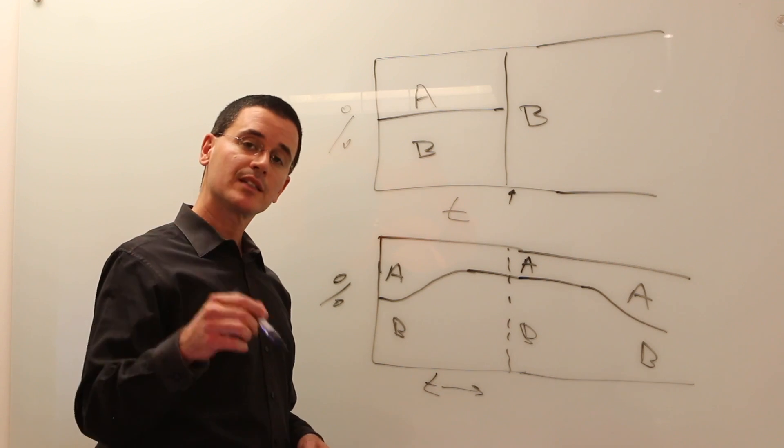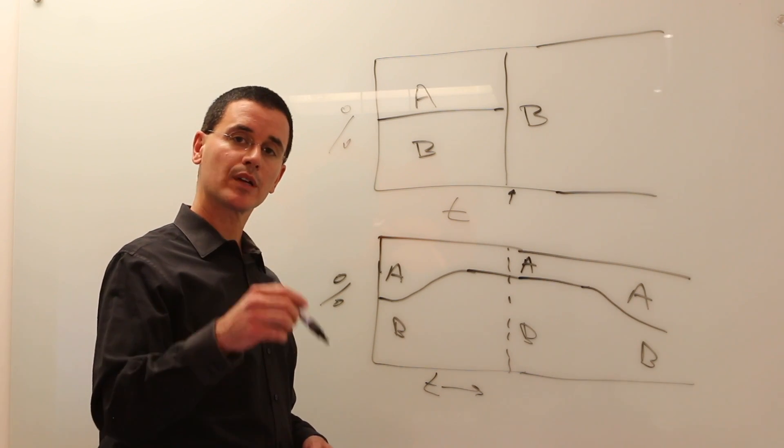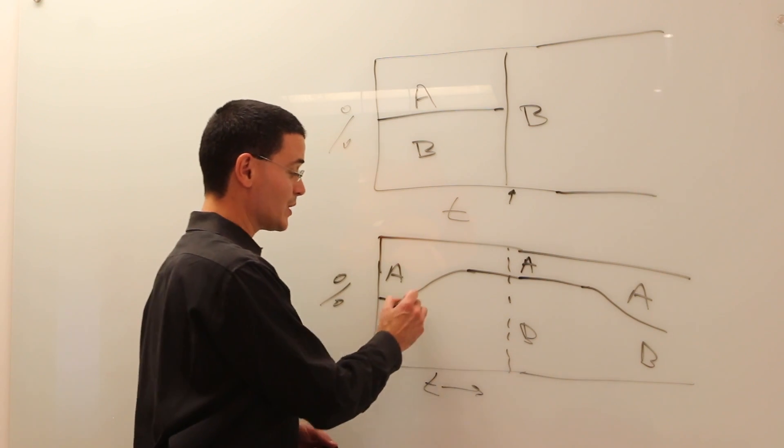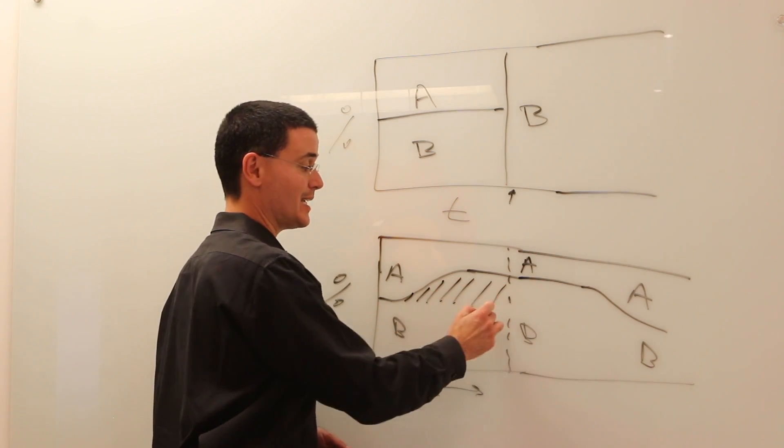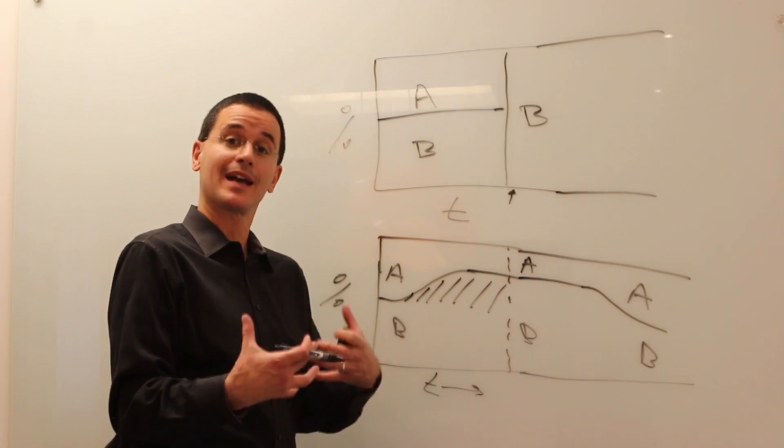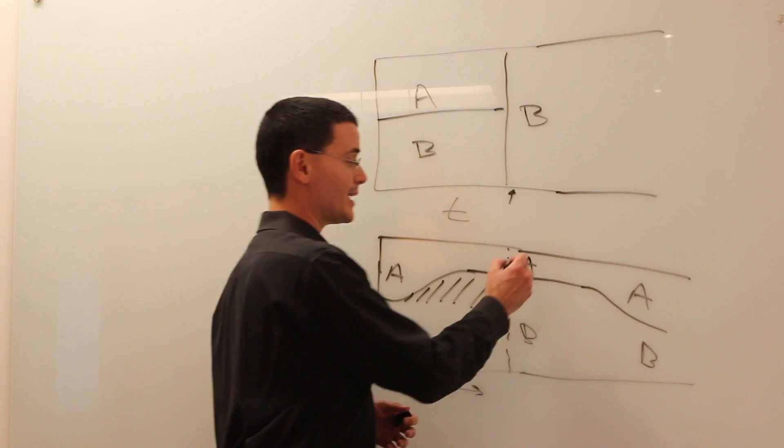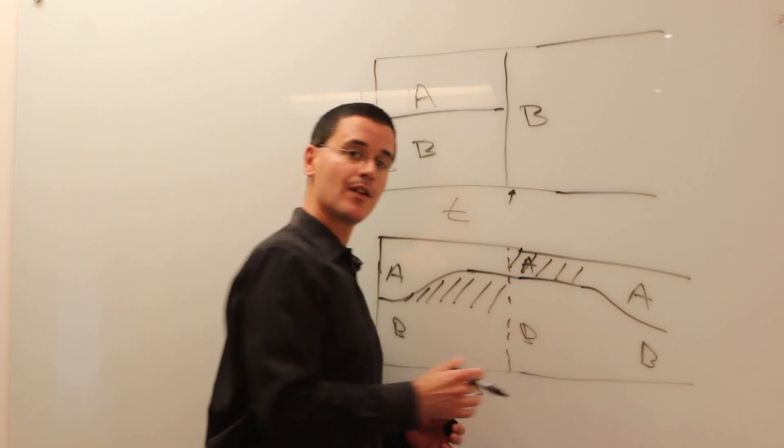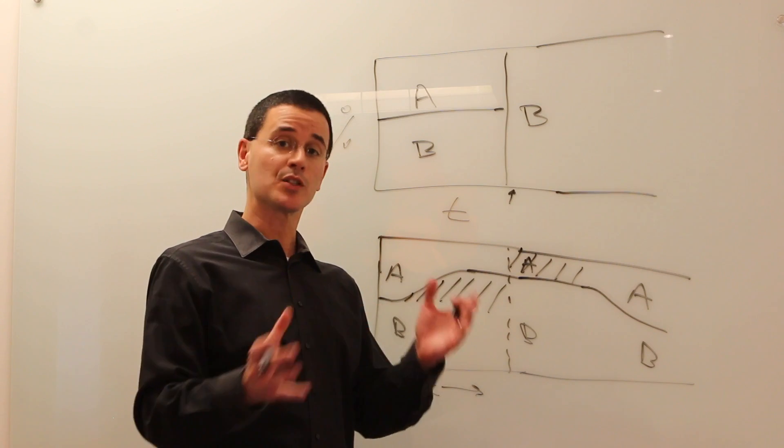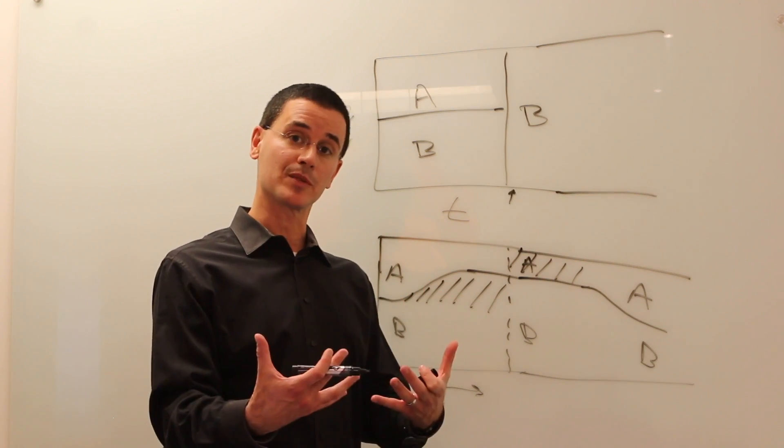Predictive personalization drives more conversions than A-B testing because you get incremental conversions here from reallocating traffic earlier, so you get faster results. You'll get incremental conversions here because you're personalizing what each person sees, not doing winner-take-all, so you get better results.